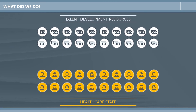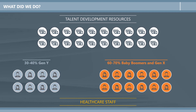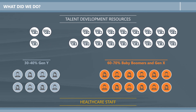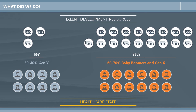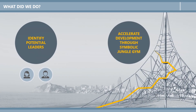To show the healthcare staff and talent development resources available, and then show the breakdown with millennials making up 30-40% of healthcare staff by splitting them apart in proportion. And showing that despite this, more than 85% of talent development resources go to baby boomers and Generation X — so there's clearly a disparity. We need to identify individuals capable of stepping into leadership roles and accelerate their development through the organisation with a symbolic jungle gym, so they can become the future. That's one option, and it's a good one, but it relies on me telling the story and you just listening to it. It's passively engaging.